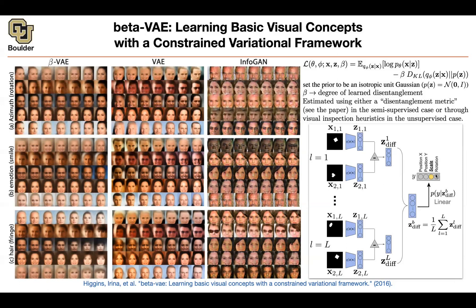You know the ground truth here because this is artificial data. Using this classifier, which you can fully train, you can come up with a disentanglement metric — it has to do with the accuracy of this task. Using that, you can try to set beta. Otherwise, for complex image tasks, you can set it using heuristics and inspection. I'll stop here — for those of you who have questions, I'll be around.